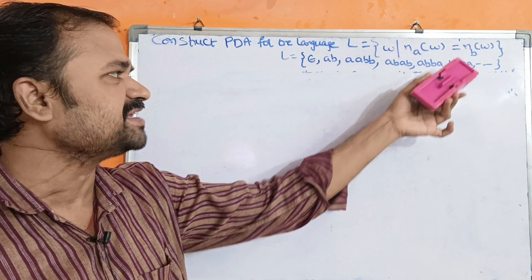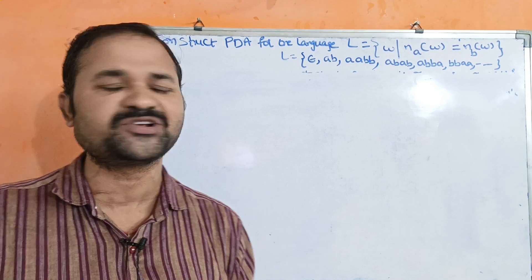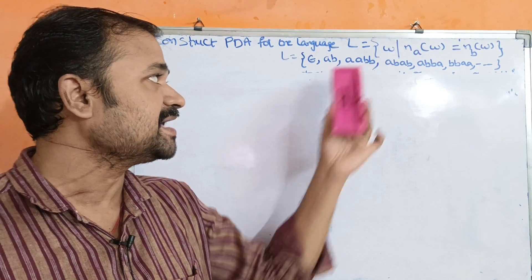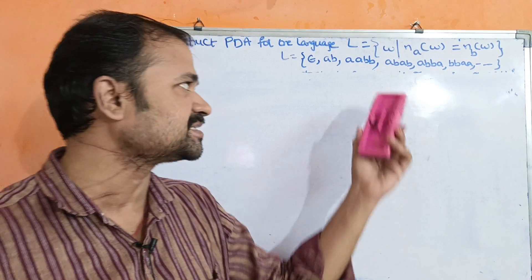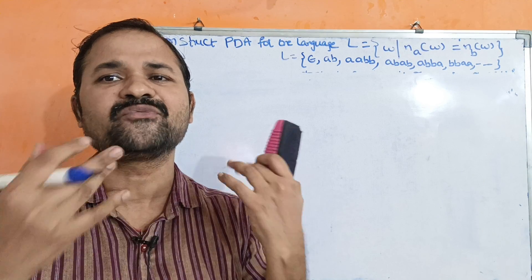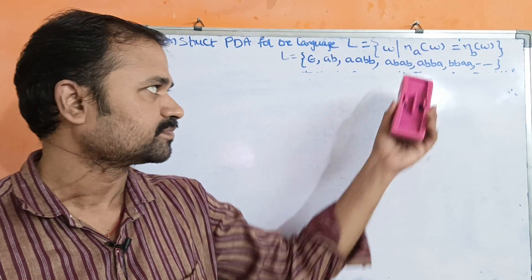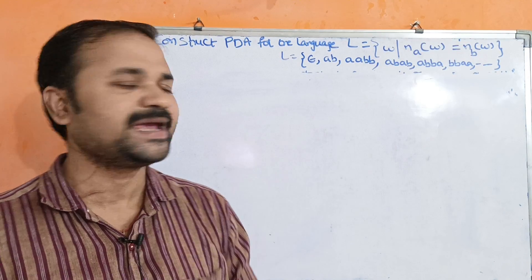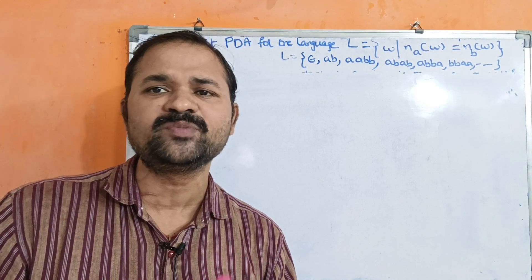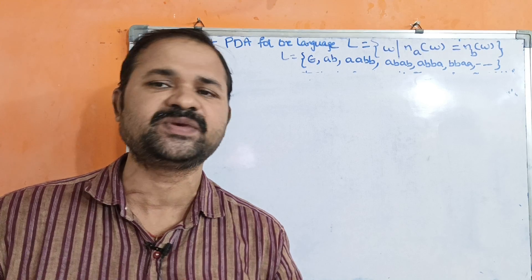Let us see the language. Epsilon means zero A's and zero B's. A, B — so 1 A and 1 B. A, A, B, B — so 2 A's and 2 B's. A, B, A, B — 2 A's and 2 B's. B, B, A, A — 2 A's and 2 B's. We can have A's and B's at any location. Likewise we can have 3 A's and 3 B's, 4 A's and 4 B's, 5 A's and 5 B's, and so on.